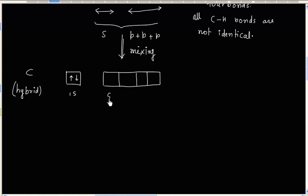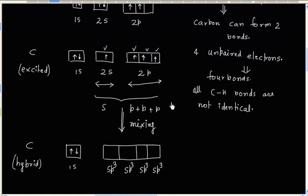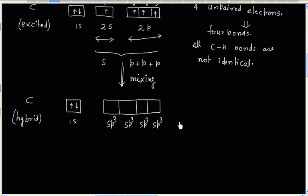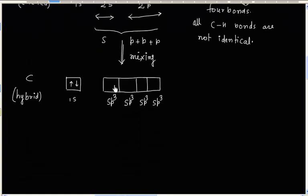The name of these orbitals will be sp3. So we will have 4 sp3 hybrid orbitals. Now these 4 hybrid orbitals each will have 1 electron, because we have 4 electrons to place in the hybrid orbitals, so each will have 1 electron.